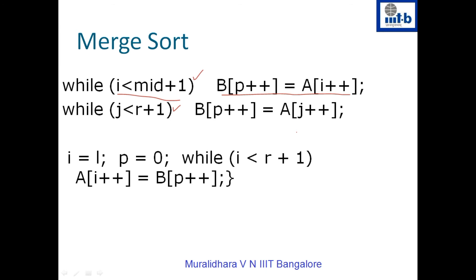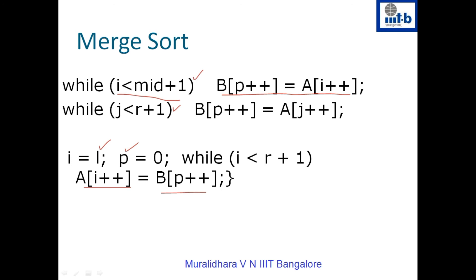The objective is to sort the sequence from L to R. We have sorted it and written the answer to B, but we want the result back in A. So we copy everything from B back to A, writing from index L to R. After the merge function completes, the input from L to mid was sorted, from mid+1 to R was sorted, and the entire sequence from L to R is now sorted. Note that to implement this, we use an additional array B whose size in the worst case needs to be order N.